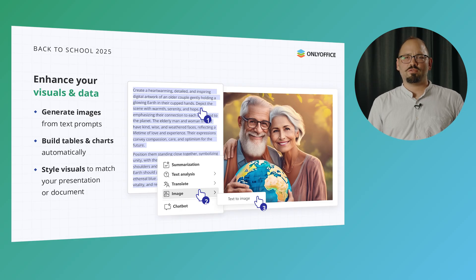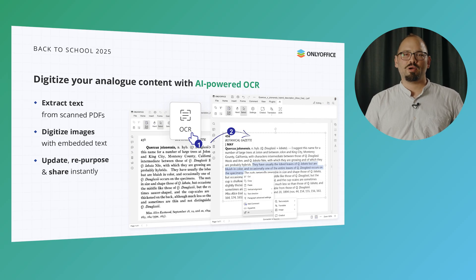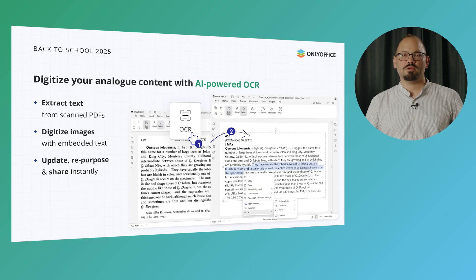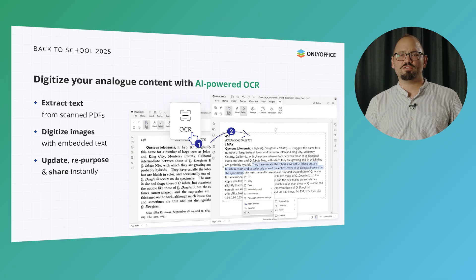AI helps you get exactly what you need without leaving the editor. If your materials start on paper, that's also no problem at all. With AI-powered OCR in OnlyOffice, you can extract text from scanned PDFs to make them searchable and editable. You can digitize images with embedded text so you can update, repurpose, or share them instantly. That means no retyping or time lost — just faster, cleaner access to the content you already have.